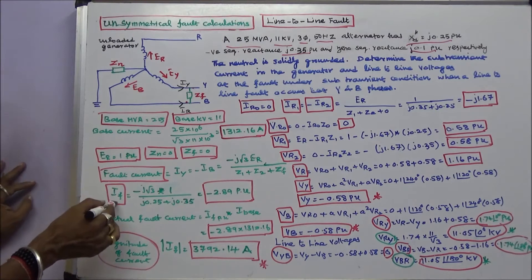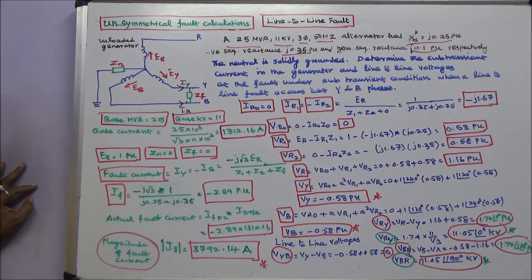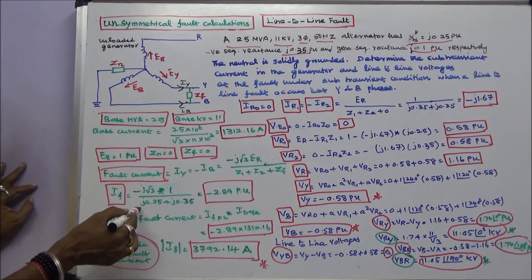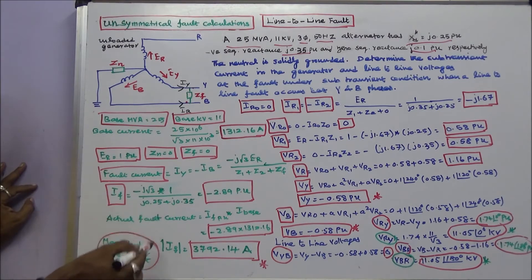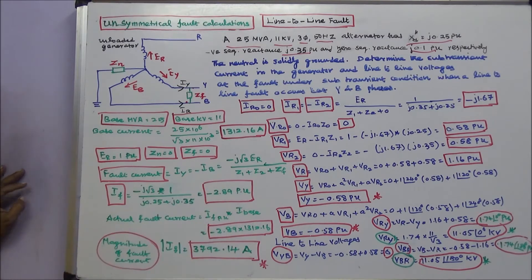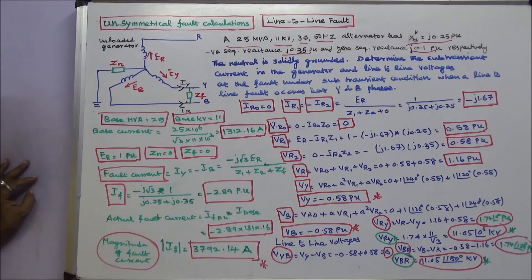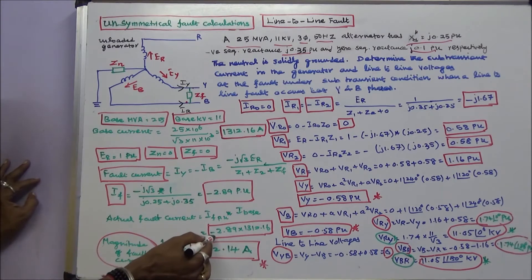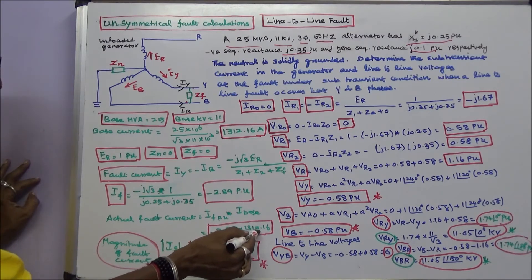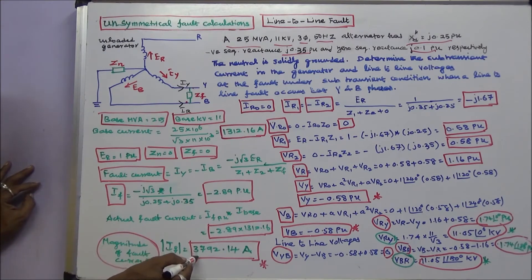So IF is equal to minus j into root 3 into 1, since ER is equal to 1. Positive sequence impedance is j0.25 and negative sequence impedance is j0.35. IF is equal to minus 2.89 per unit. Actual fault current is per unit current into base current: minus 2.89 into 1312.16. The magnitude of fault current is 3792.14 amps.